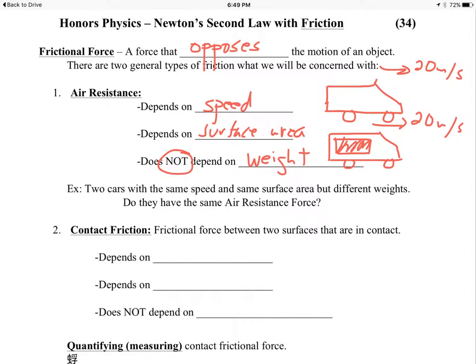Contact friction, friction between two things that are rubbing together, depends on two things as well. Basically, it depends on the texture of the two surfaces. Things that are rough are going to have more friction, like sandpaper. But it also depends on the force that pushes the two surfaces together. In physics, we call that the normal force. In math and science, the word normal means perpendicular.